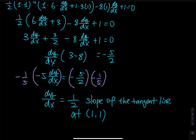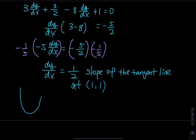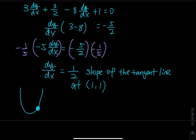To visualize this: imagine a curve — not necessarily the graph of this function, but any curve. At a specific point, dy/dx gives the slope of that curve. After plugging in the point (1, 1), we found the slope is one-half at that blue point. The tangent line is a straight line touching the curve at exactly that point.